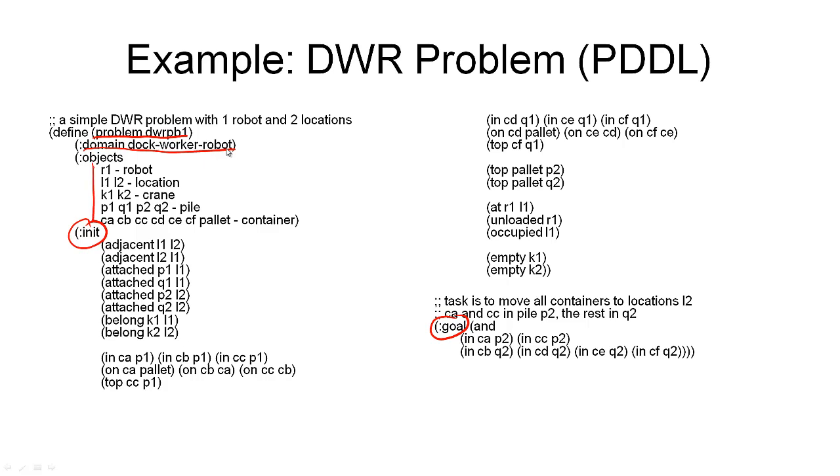Then we can explicitly define what objects we're using in this domain. This is actually optional and requires the typing extension. So we say that there's one robot, which is of type robot. Then we have two locations, two cranes, and four piles here. And all together, we have six containers and the pallet. The pallet is, of course, also defined in the domain, but that doesn't matter here. So this declares what things exist in our states.